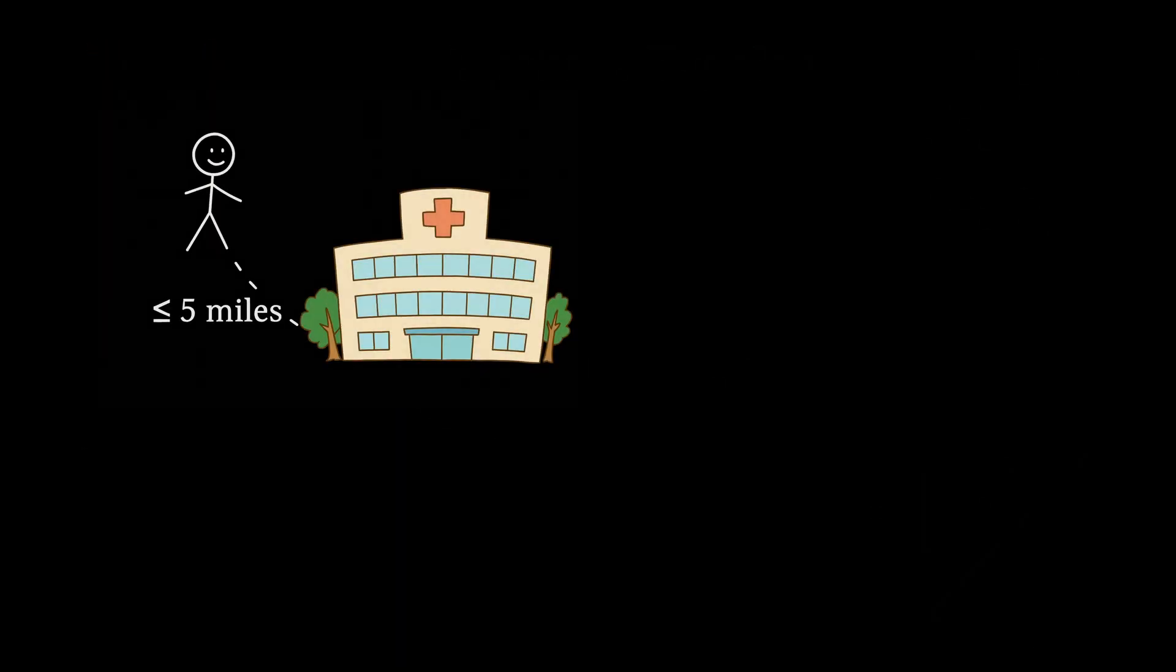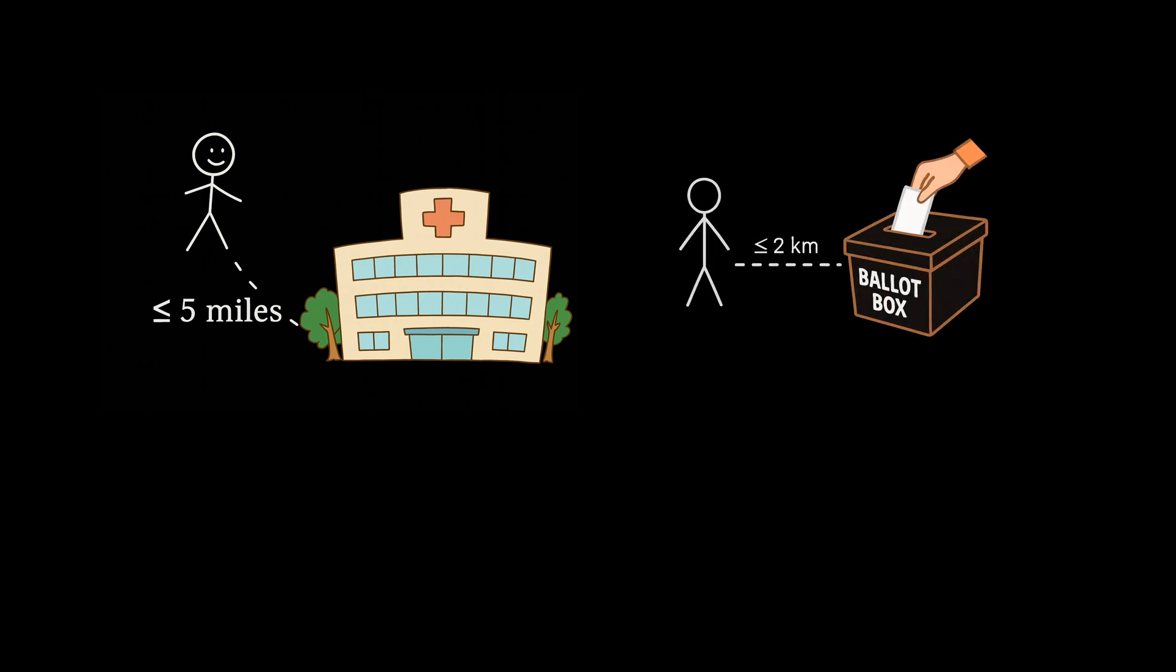Back in 2021, President Biden announced a goal: make sure 90% of Americans live within five miles of a COVID vaccination site. Similarly, in India, the law requires every voter to have a polling site within two kilometers. At first, that sounds reasonable, but this kind of rule has two problems.